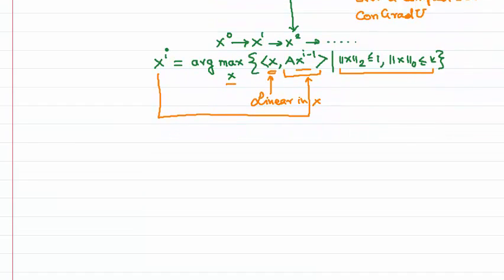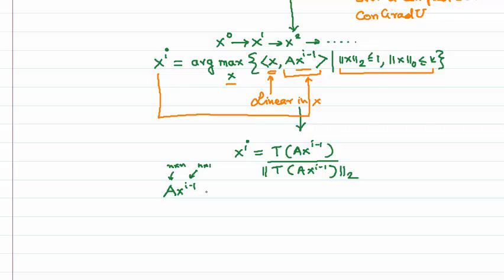The paper then goes on to show how this maximization problem can be solved. And in fact, this has a closed-form solution. So the closed-form solution is this. The closed-form solution is that xi equals an operator T I'm about to define of A xi minus 1 divided by the 2 norm of T A xi minus 1. Now let me explain T step by step. So first let's just understand A xi minus 1. So recall that A is n by n. Xi is n by 1. So this whole thing is a column vector A that has n components to it. So let's say the components are A1 through An.